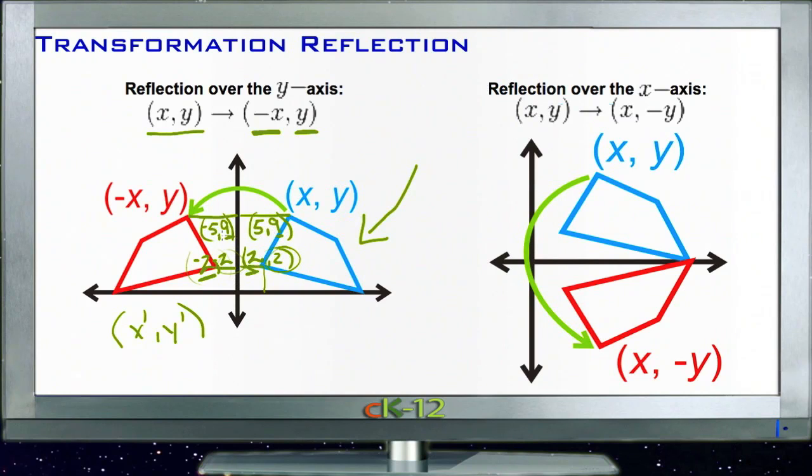To reflect over the x-axis seems a little backward because the x-axis runs left to right. But that's because we're putting the mirror horizontally, so the image changes vertically. To do that, we just do the opposite—whereas for the y-axis we changed the x-coordinate, for the x-axis we change the y-coordinate.